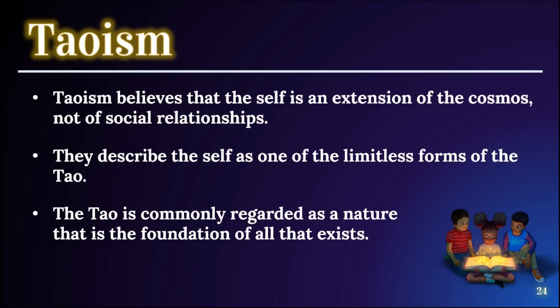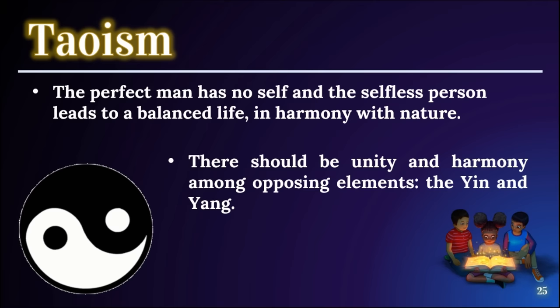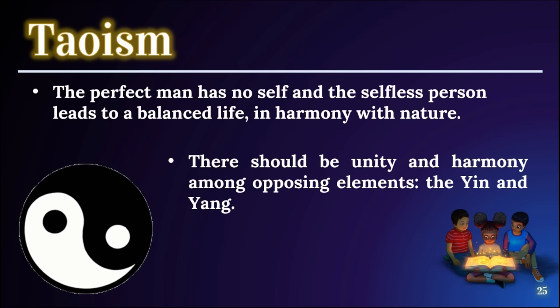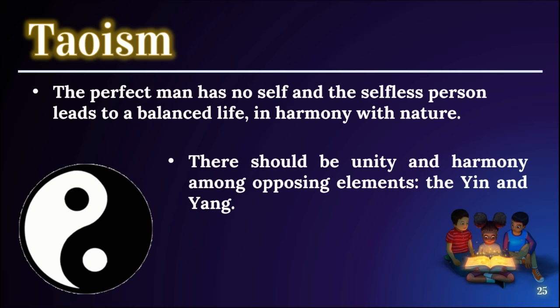Taoism describes the self as one of the limitless forms of the Tao — the Tao being the nature that is the foundation of all that exists. The perfect man has no self, and the selfless person leads a balanced life in harmony with nature. There should be unity and harmony among opposing elements: the yin and yang.